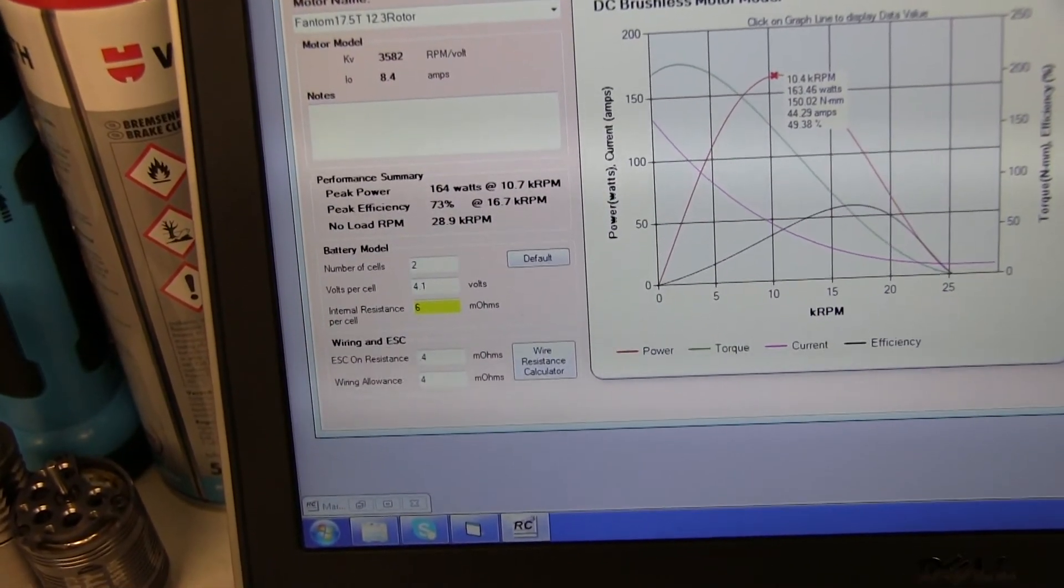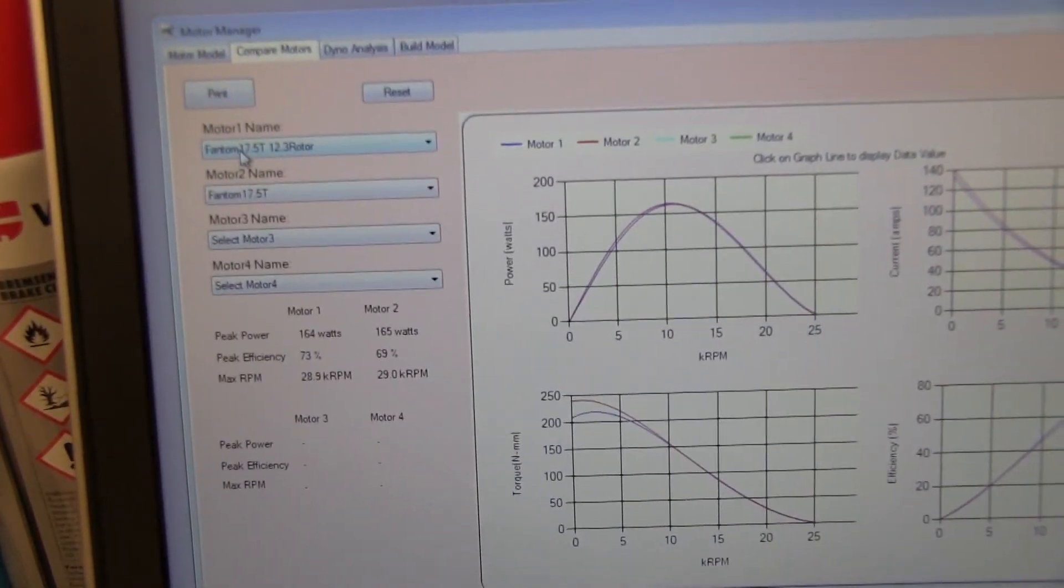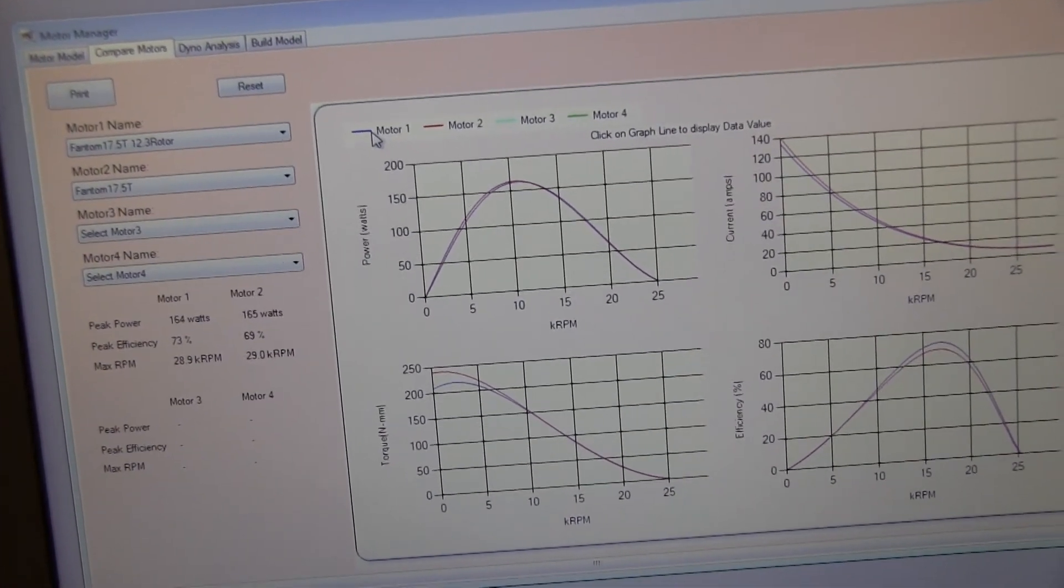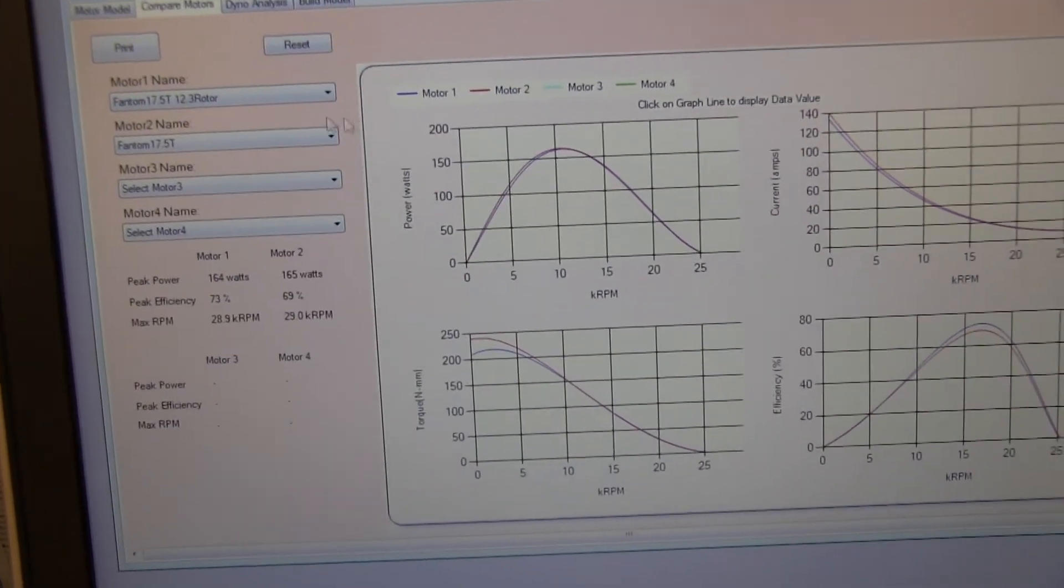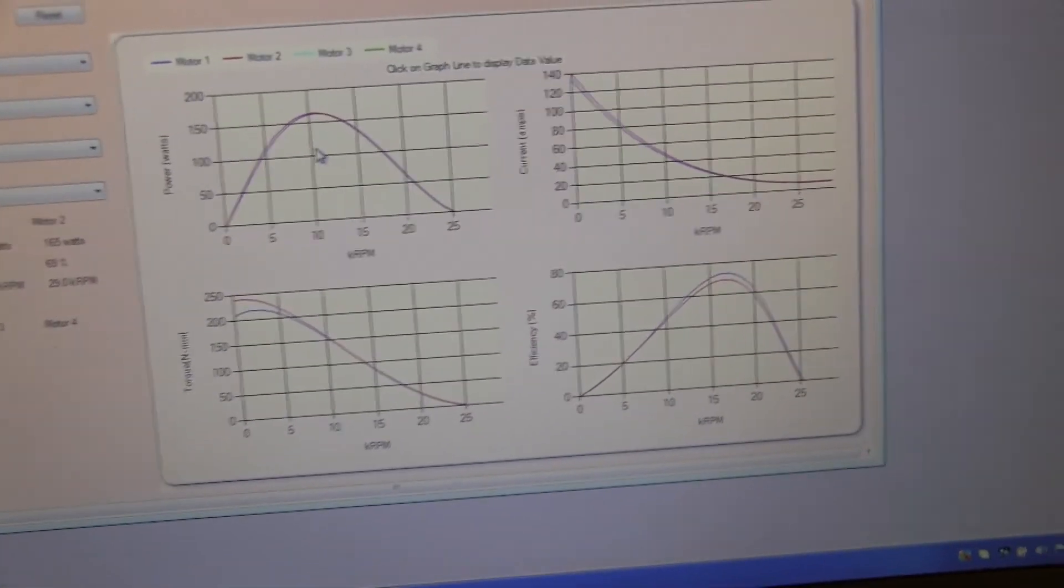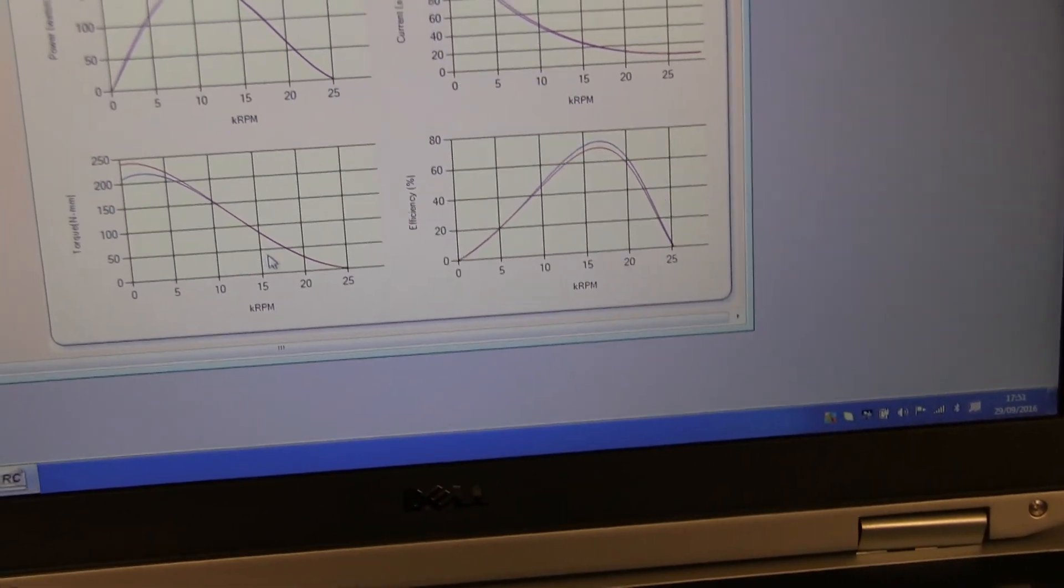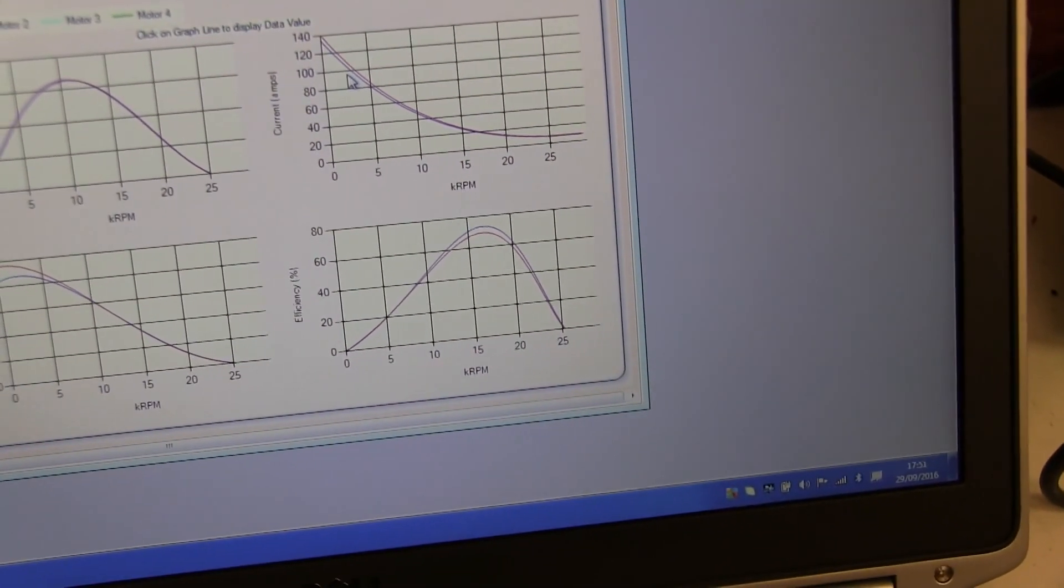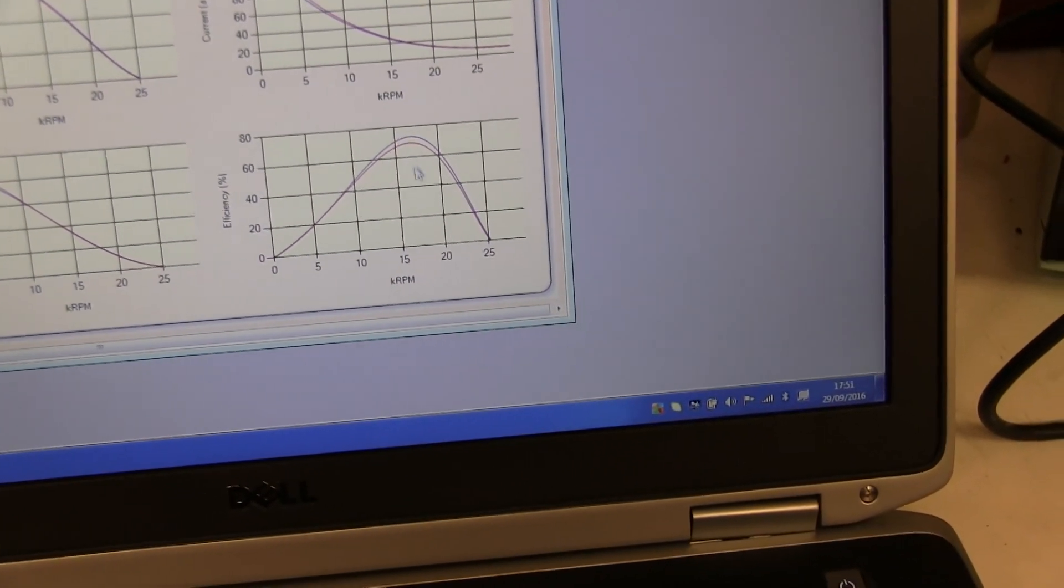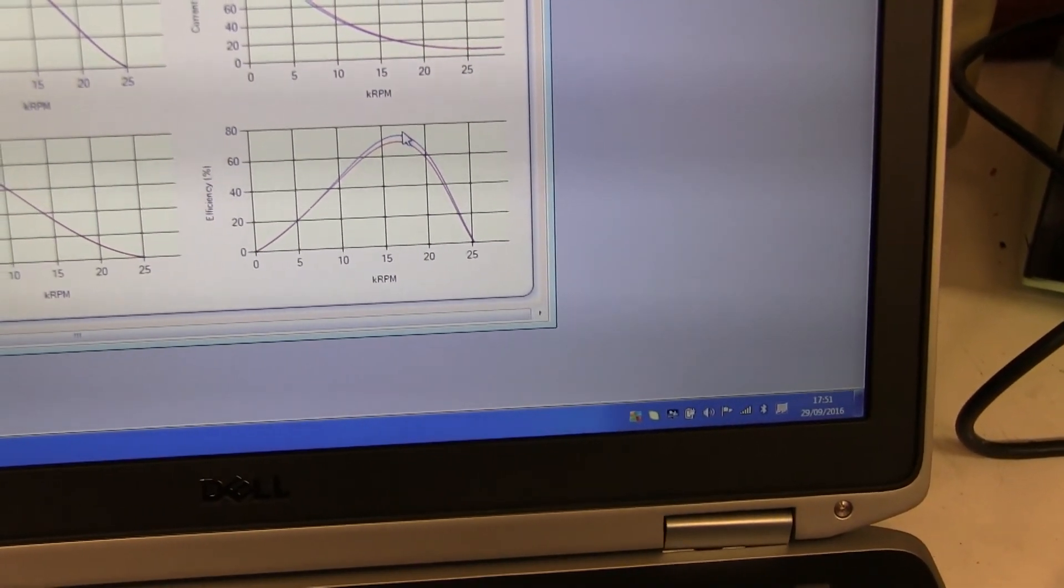And then we can compare the two motors. Here they are. You've got the standard Phantom, the one with the 12 rotor. The blue one is that one. And the red one is this one before we change the rotor. And the curves are very similar. They have peak power, the current draw here, and the efficiency point.